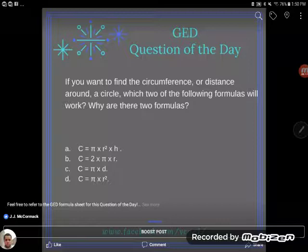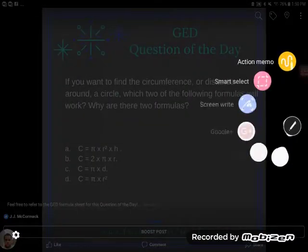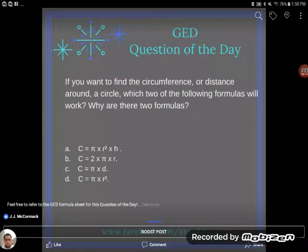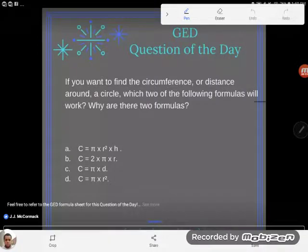It says if you want to find the circumference or distance around a circle, which two of the following formulas will work? And then it says why are there two formulas? So the first question, which two of the following formulas will work?